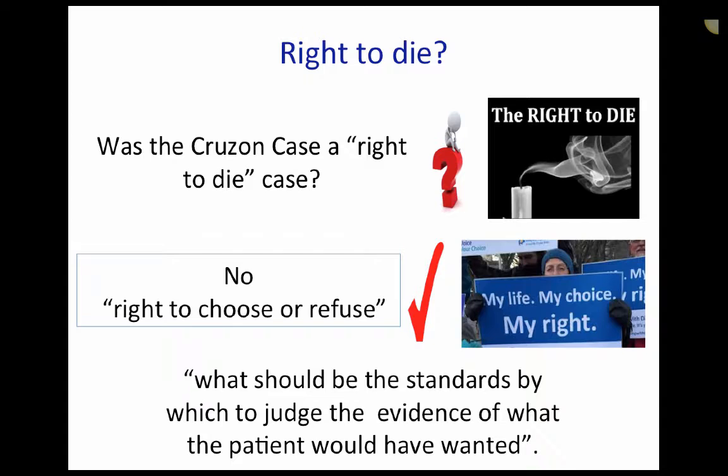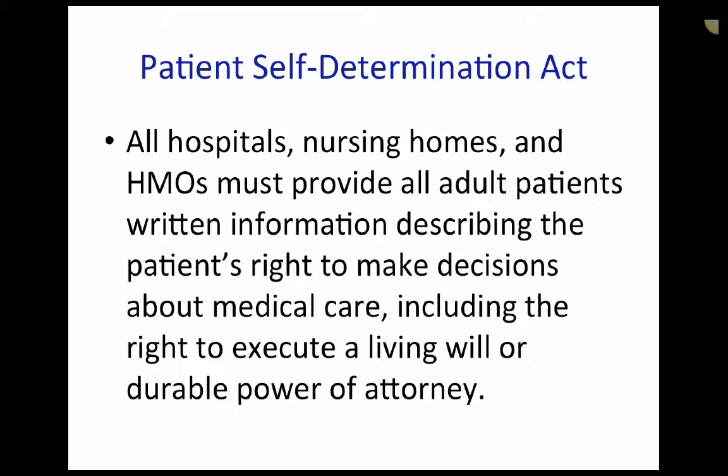Pushed by the public's reaction to Kruzan and the requirement of clear and convincing evidence, Congress and the President decreed the Patient Self-Determination Act. This act required all hospitals, nursing homes, and health maintenance organizations to provide all adult patients written information describing the patient's right to make decisions about medical care, including the right to execute a living will or a durable power of attorney. We will return to the issue of advanced planning in just a few minutes.